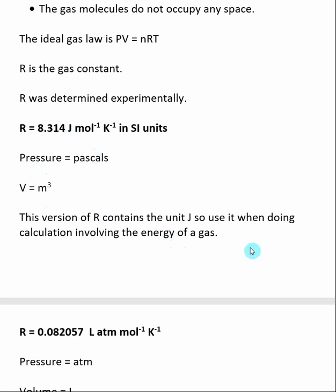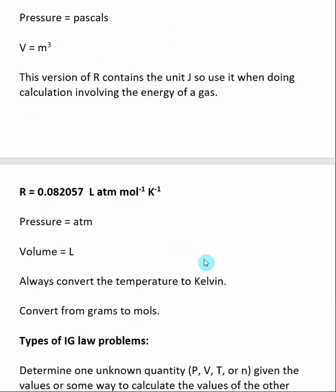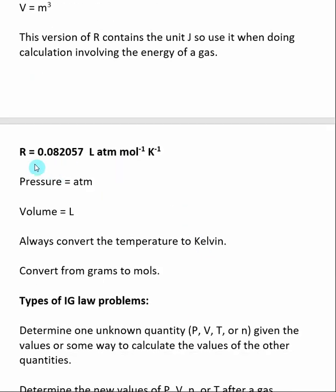So when we are doing other calculations involving a gas, we typically use this variation of R, which is 0.082057 liters atmosphere per mole Kelvin. The reason why we typically use this R value is the pressure is in ATM, and the volume is in liters.